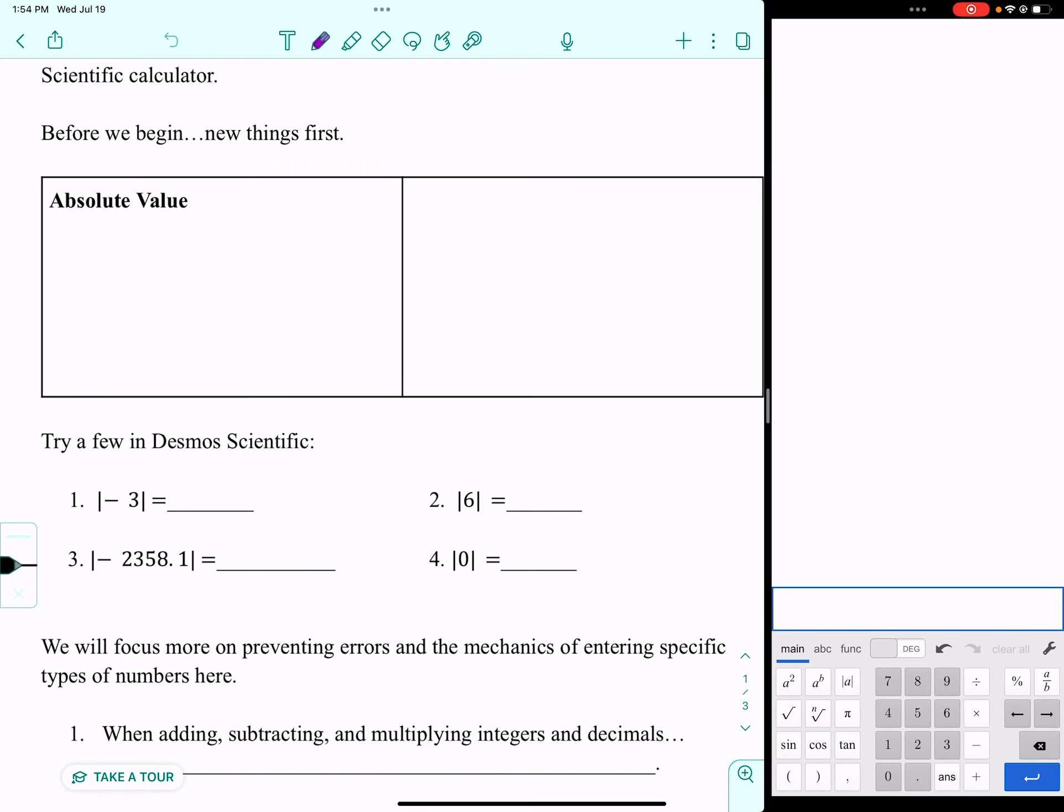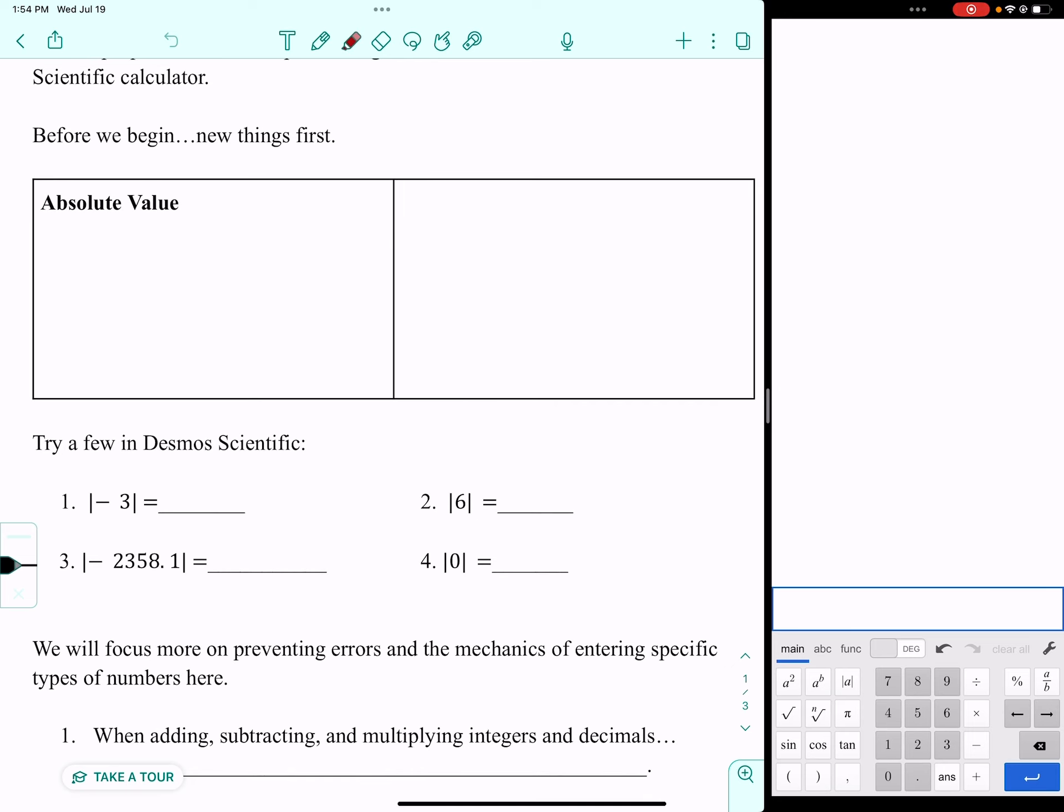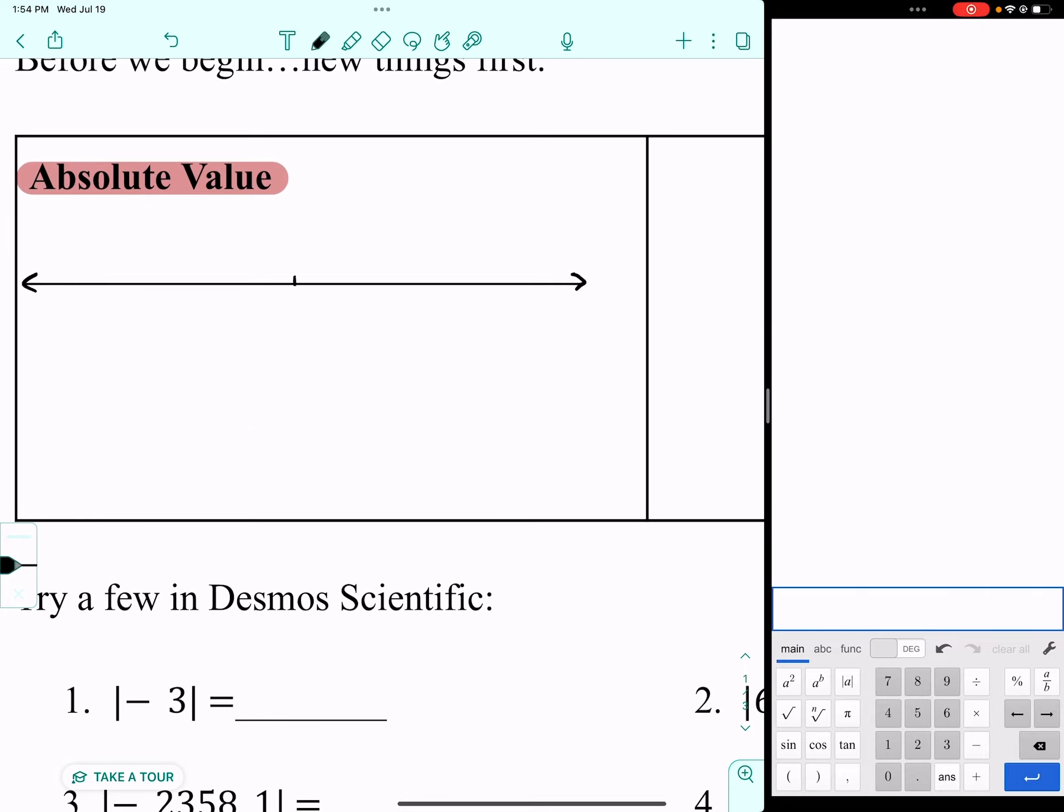The first thing we need to do is talk about something that may or may not be new to you. We need to take a look at the idea of absolute value. To talk about absolute value, I'm going to start out by drawing you a number line. Absolute value is nothing more than the distance from zero.